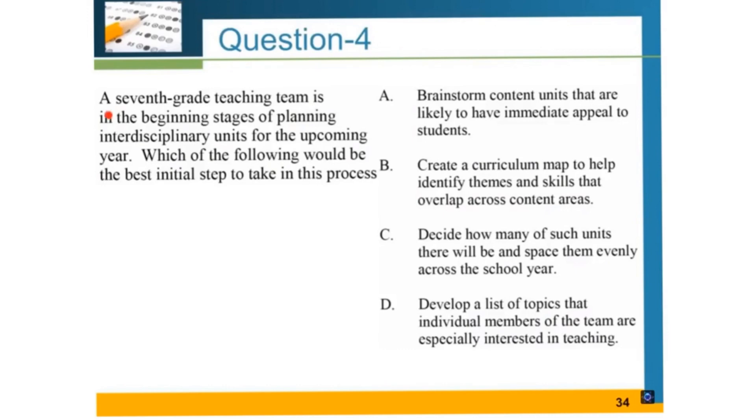Question number four: A seventh grade teaching team is in the beginning stages of planning interdisciplinary units for the upcoming year. Which of the following would be the best initial step to take in this process? A) Brainstorm content units that are likely to have immediate appeal to students. B) Create a curriculum map to help identify themes and skills that overlap across content areas. C) Decide how many such units there will be and space them evenly across the school year.